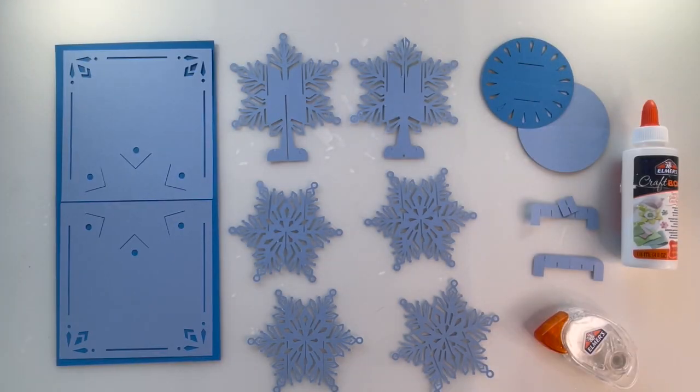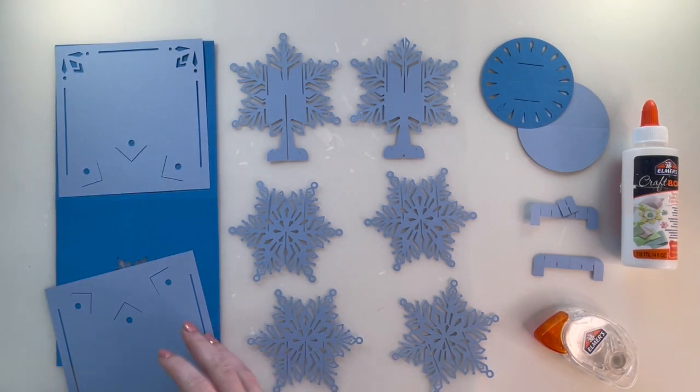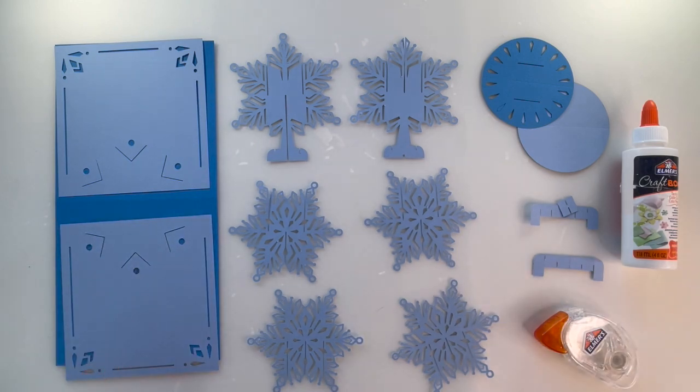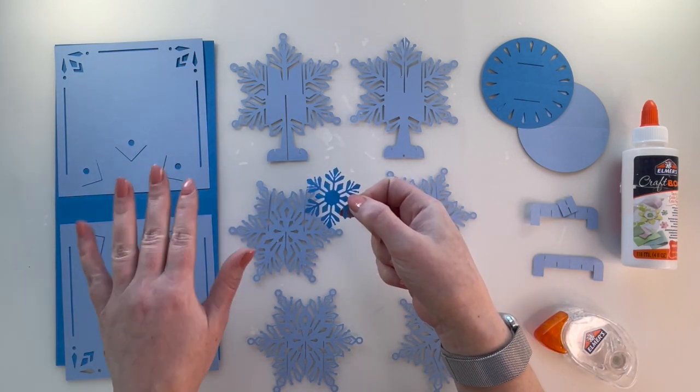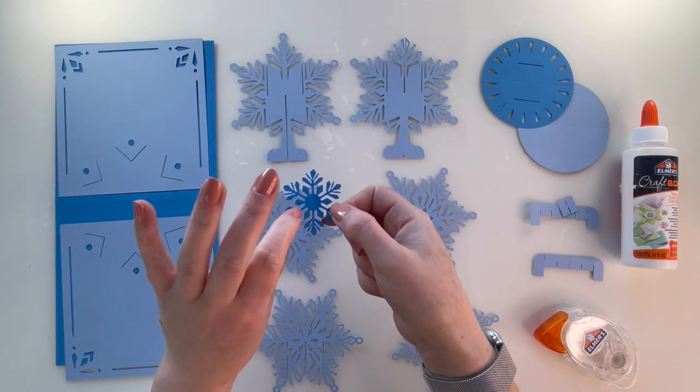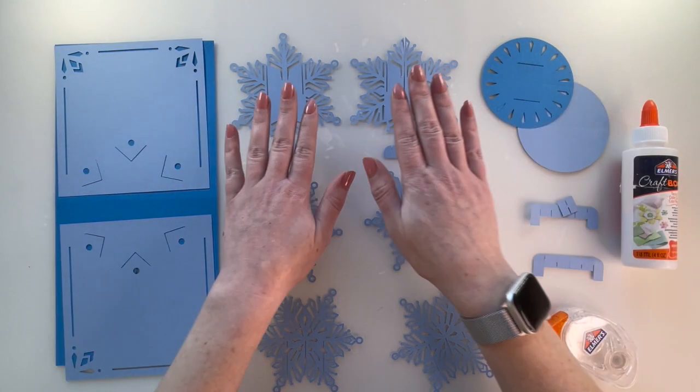You could make it smaller, but there's some pretty intricate cuts in the snowflake itself. I'm going to get this cut out so we can put it together. So you can see I've got it all cut out here. There's the main part of the card, there's the front snowflake cut out.